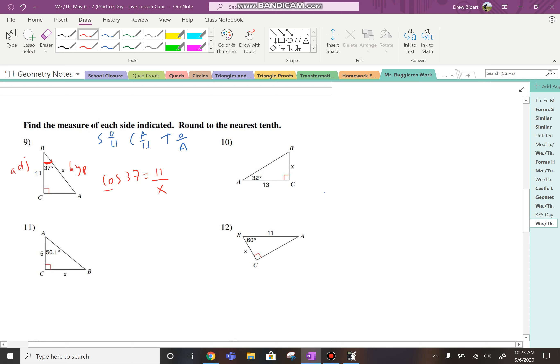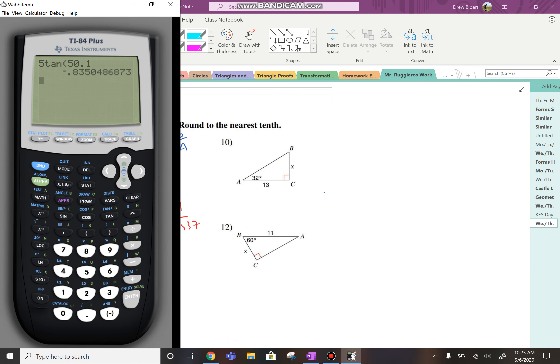Now, we don't press the second button because we're trying to find the side. We actually have to cross multiply. X cos 37 equals 11. And then remember, you have to divide by the cosine of 37. So X would be 11 divided by cos 37. I go to my calculator, and to the nearest tenth, that should be about 13.8.